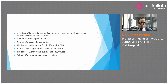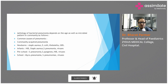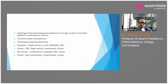The etiology of bacterial pneumonia depends on the age as well as the microbial pattern in the community. Common causes of community-acquired pneumonia in the newborn include Staphylococcus aureus, E. coli, Klebsiella, gram-negative organisms, and Streptococcus pneumoniae. In infants, the common pathogens are H. influenzae, Staphylococcus aureus, Streptococcus pneumoniae, and viruses.